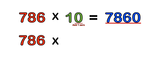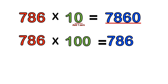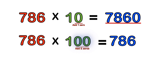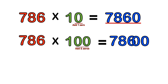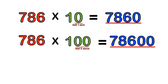How about 786 times 100? How quickly can you do that? Again, step one: take the whole number, copy it into the answer. Step two: count the number of zeros and add them to the end of the number. So 786 times 100 equals 78,600.